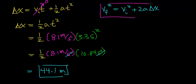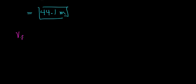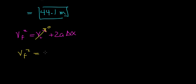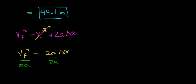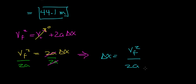Now I want to show the same result using the second equation. Starting with vf² = vi² + 2aΔx, and since the initial velocity is 0, this simplifies to: vf² = 2aΔx. Solving for Δx, we divide both sides by 2a — the 2a cancels on the right — giving us: Δx = vf² / (2a).